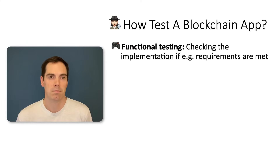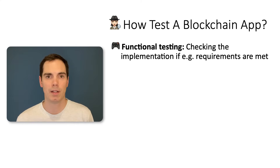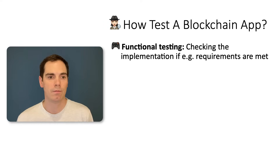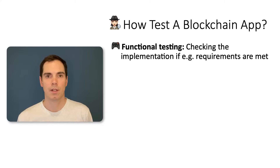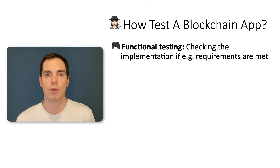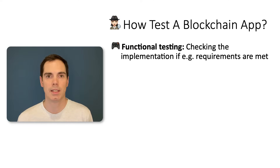Functional testing applies to blockchain applications because, as mentioned, it's software. You can check the implementation against the requirements to see if they are met. With plain acceptance criteria, if they are well written, you can do functional checks, test against those acceptance criteria, do some exploratory testing, and integration testing or functional testing is covered.